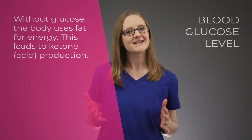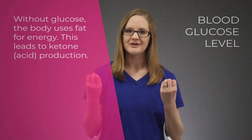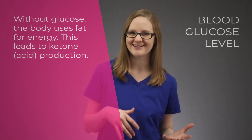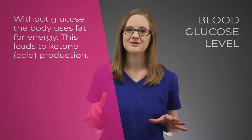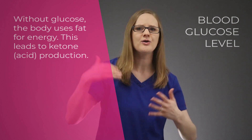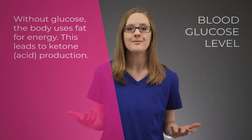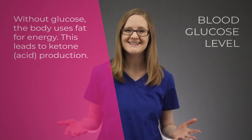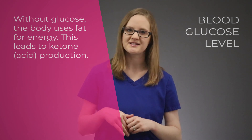Let's dive into DKA labs. The first one we're going to talk about is glucose level. During diabetic ketoacidosis, the cells in the body are not able to use glucose for energy, so the body uses fat instead. When fat is broken down, acids are released, and these acids are called ketones — hence the name, ketoacidosis. Because the cells can't use glucose for energy, the glucose just hangs out in the blood, and this leads to hyperglycemia. You'll need to keep an eye on their blood glucose level, because it can be elevated during diabetic ketoacidosis.